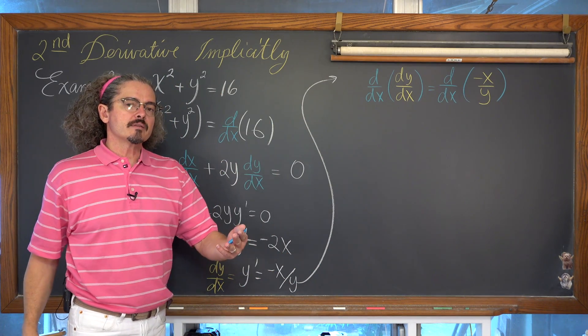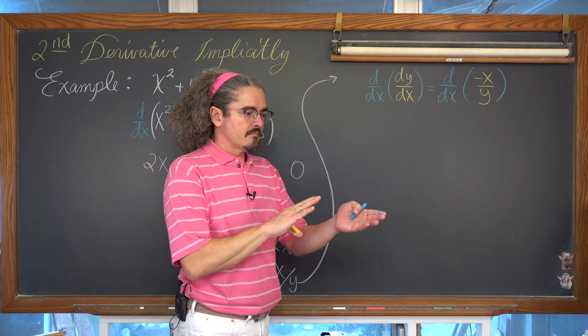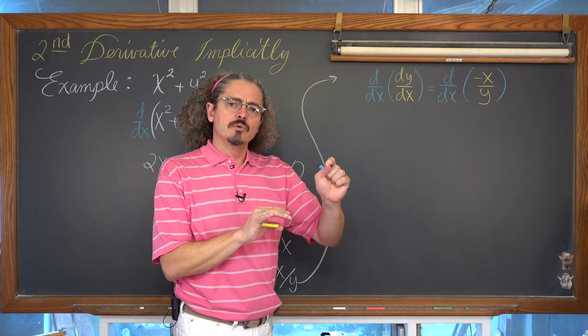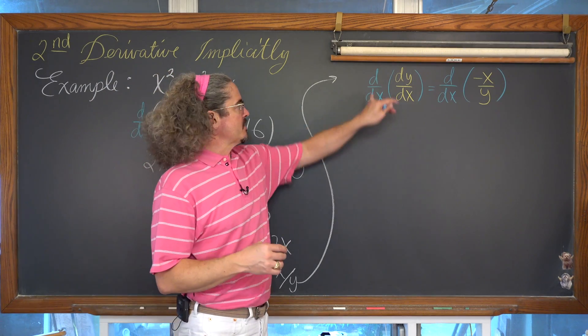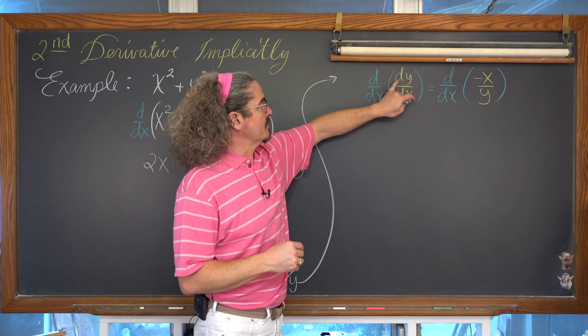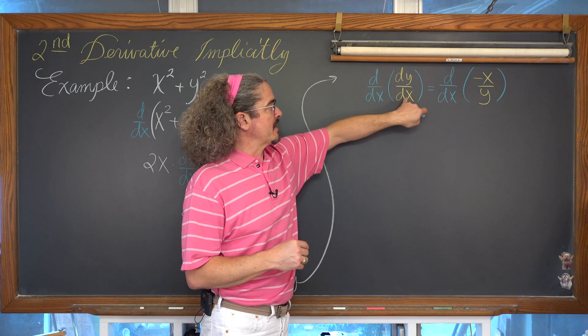When you look at the notation of a second derivative, the little exponent of 2, if you're not using like a y double prime notation, it shows up in different places on that notation. Well, think about what we have here, the derivative of y with respect to x.